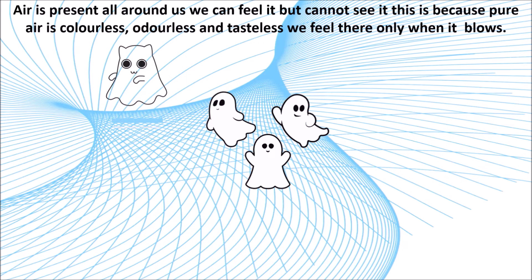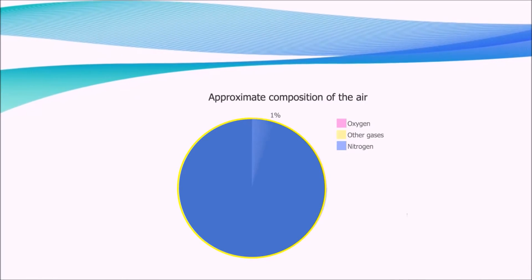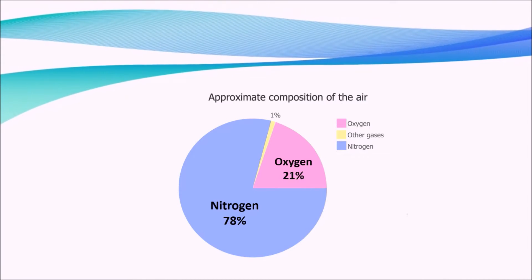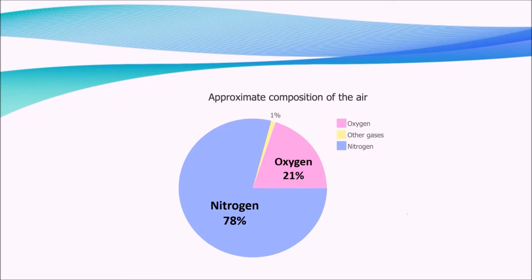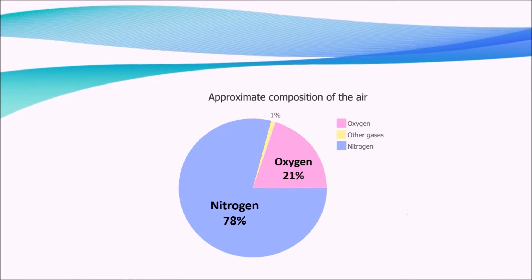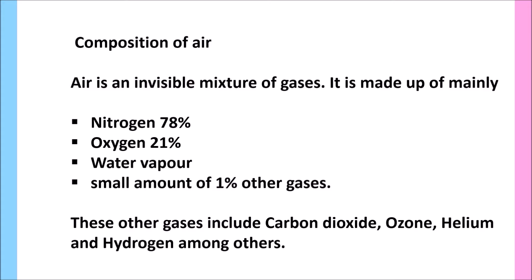Air is present all around us. So, what is the composition of air? Air is an invisible mixture of gases. It is made up mainly of nitrogen — nearly 78% — and oxygen, nearly 21%. It also contains water vapor and small amounts, around 1%, of other gases.